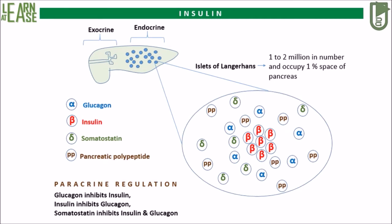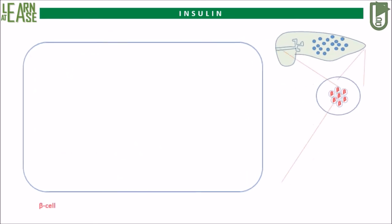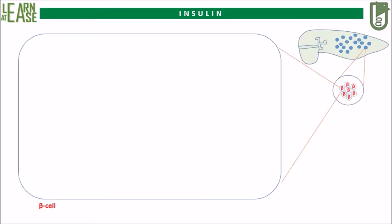Now we will focus only on beta cells to understand the production of insulin. Inside the nucleus of the beta cell, on the short arm of chromosome 11, there exists a gene that codes for pre-pro-insulin.